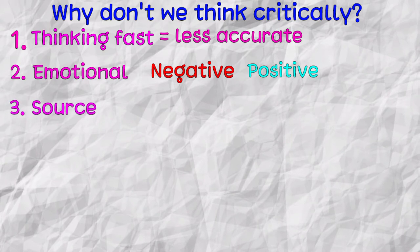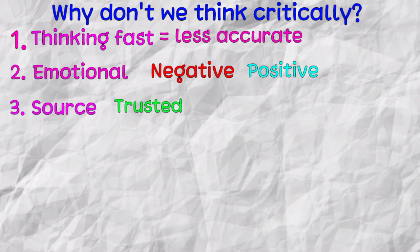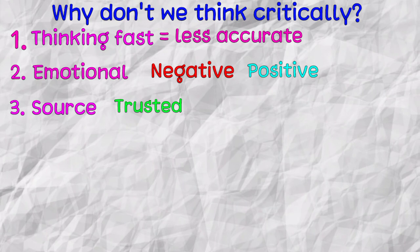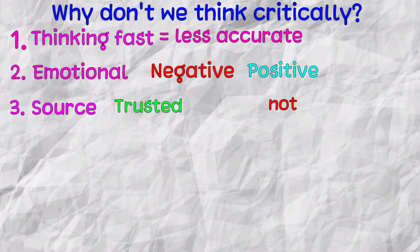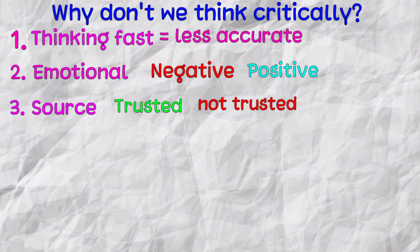Third reason is the source of information. If it is a trusted source like your best friend or well-established organization, we trust the information easily. At the same time, if it is from a suspicious source, we tend to think of it in a negative way.